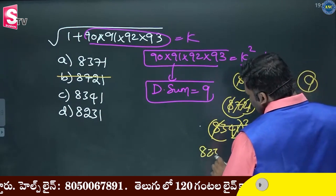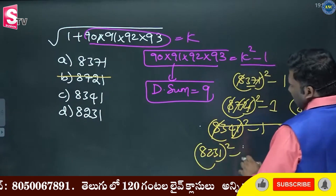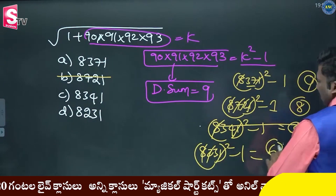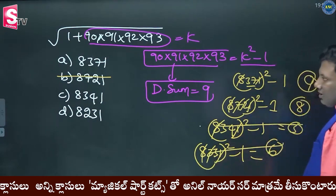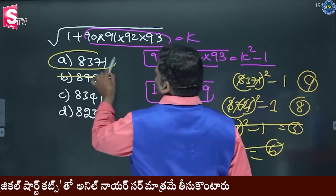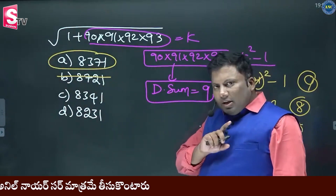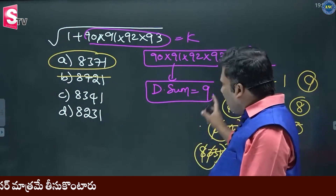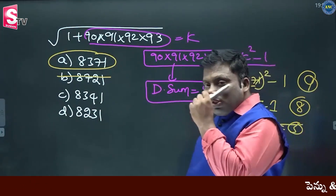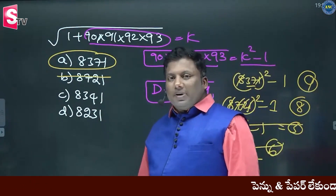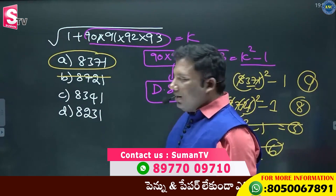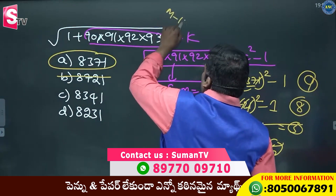Last one: 8231 squared minus 1 — we need digital sum 9. 5 squared is 25, 7 minus 1 is 6. It is also not valid. Therefore the answer is 8371. The digital sum of k squared minus 1 must equal 9. Square the answer, subtract 1, and check digital sum equals 9. This is Method 2.